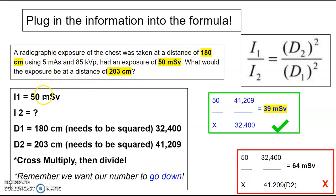So intensity or exposure is going to be inverse. So you're going to want to plug your numbers in. So I1 was 50 millisieverts. We don't know I2. D1 was 180. Remember, needs to be squared. D2 was 203. Again, needs to be squared. You want to plug these in correctly into your formula. So I1, we don't know I2, D2 squared over D1 squared.